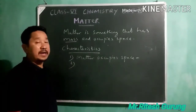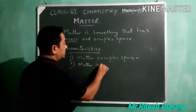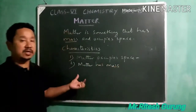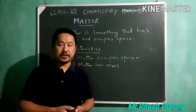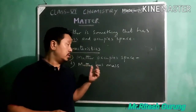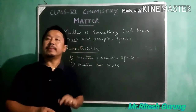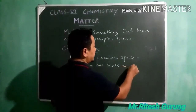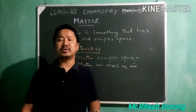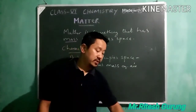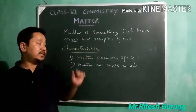Characteristic number two: matter has mass. Matter is made up of some materials. There are many things we can't see but can feel — like air. Even air is matter. To prove whether air is matter, you can carry out an activity at home, also given in the book. This activity proves that even air is matter because air has mass.